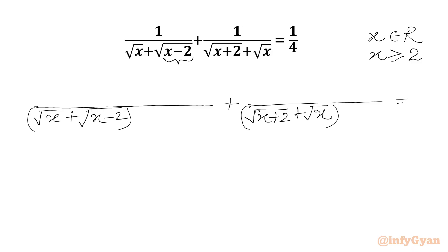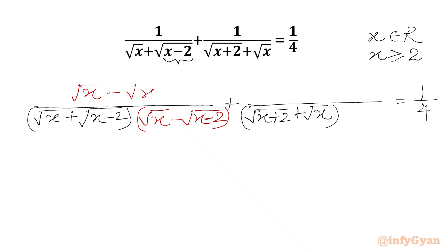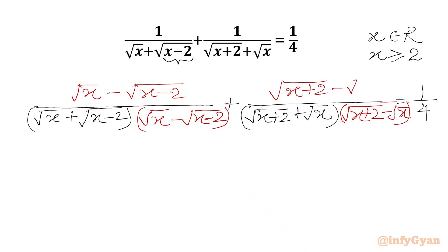Now we will rationalize our denominator. We need to multiply numerator and denominator by the denominator's conjugate. So here we will multiply by square root x minus square root x minus 2 in the numerator, and by square root x plus 2 minus square root x in the denominator.